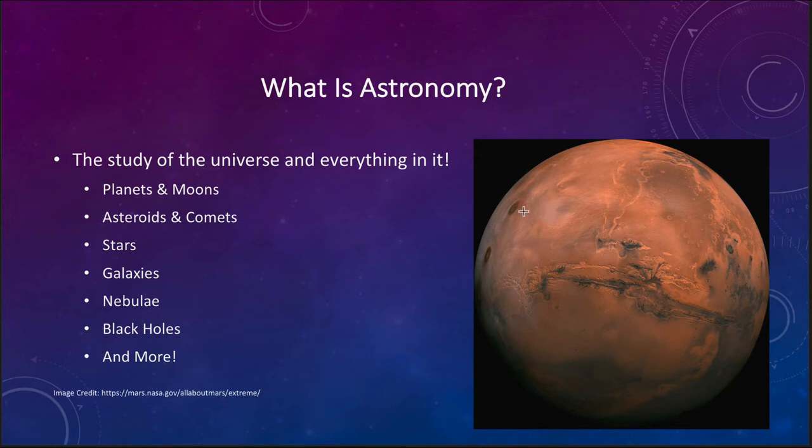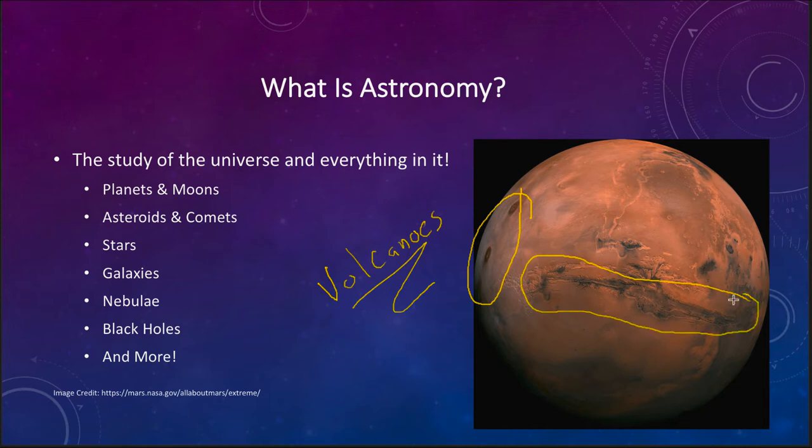Mars has some interesting features. We see some great volcanoes over here on the side that are present, not currently active but that have been active in the past. We see a great rift valley here that we call Valles Marineris, a great rift in the crust of Mars that would stretch across our entire United States.